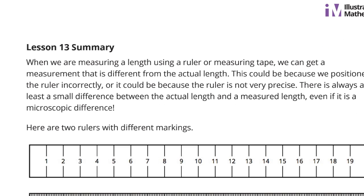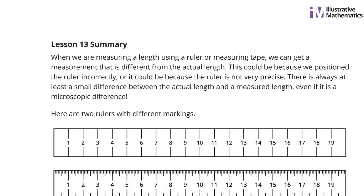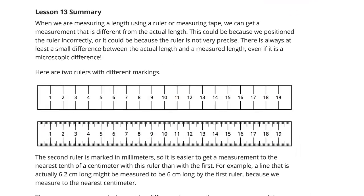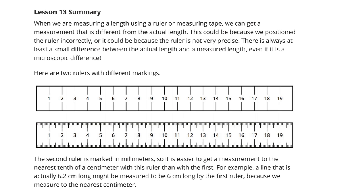And so, as we look now to our summary of lesson 13, when we are measuring using a ruler or measuring tape, we can get a measurement that is different from the actual length. It happens. This could be because we are positioning the ruler incorrectly, or it could be because the ruler is not very precise. There is always at least a small difference between the actual length and the measured length, even if it is a microscopic difference.